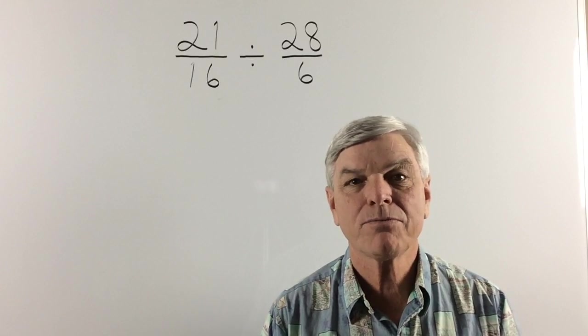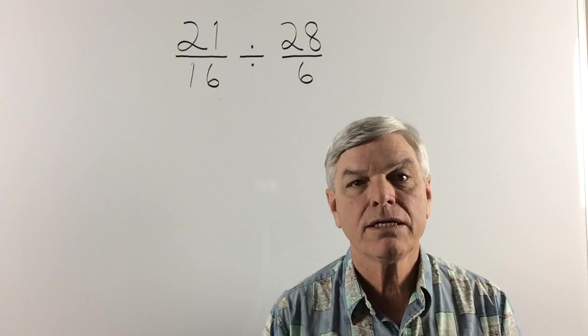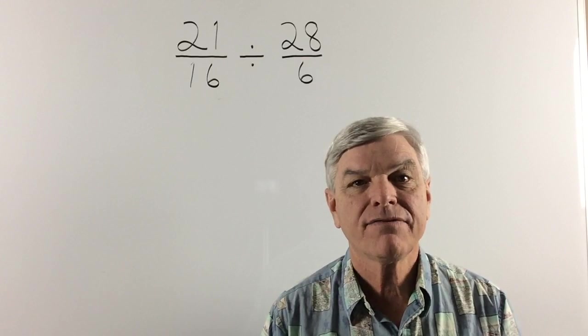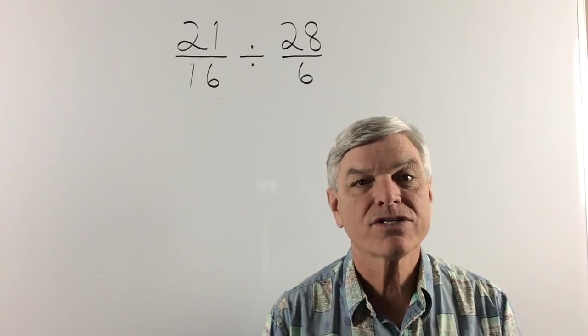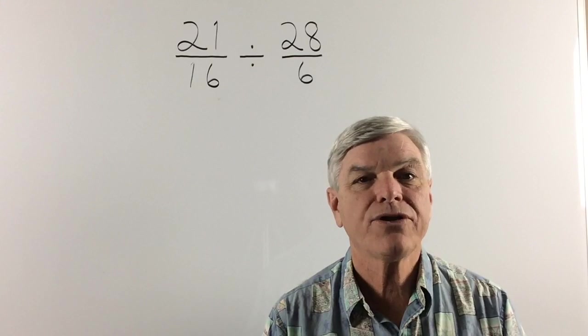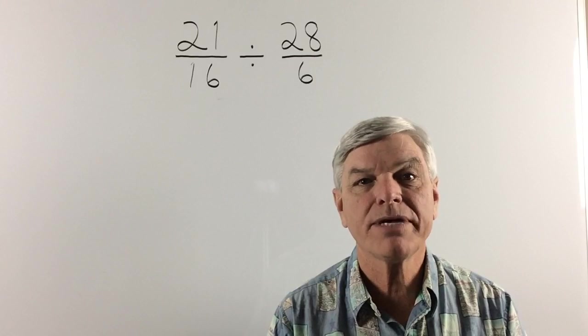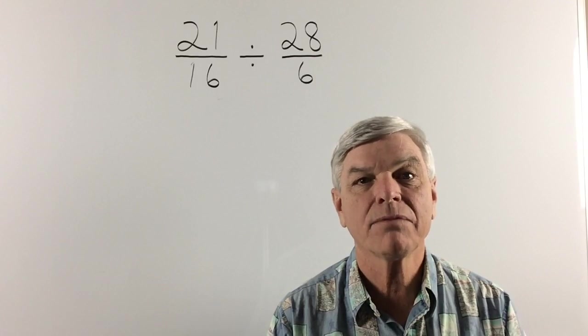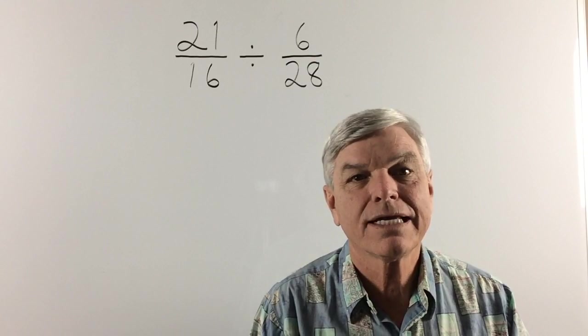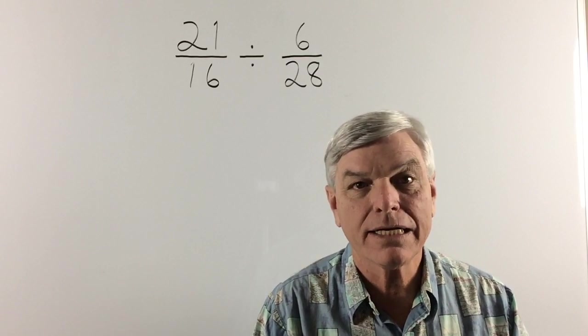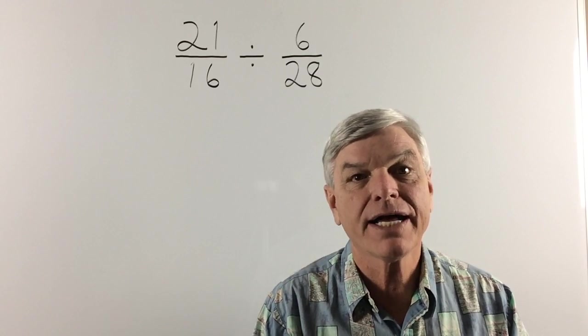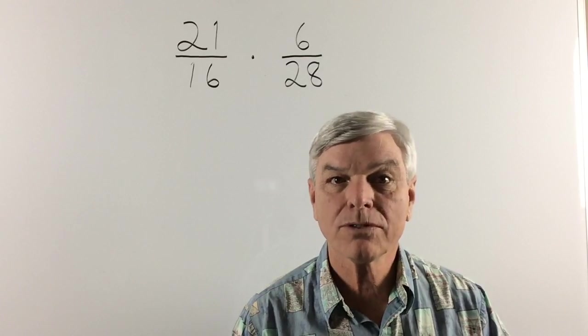Now let's do a simple division problem. 21 over 16 divided by 28 over 6. Now when you're dividing fractions, you have to invert the second number. Invert means to flip the second number upside down. There we go. We have 6 over 28. And we're no longer going to divide. We are going to multiply.